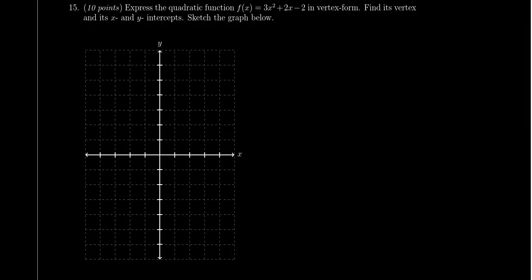In this video, we provide the solution to question number 15 for practice exam 2 for math 1050. We're given a quadratic function f of x equals 3x squared plus 2x minus 2. We have to first convert it into vertex form. Once we have it in vertex form, we're then going to graph it over here.